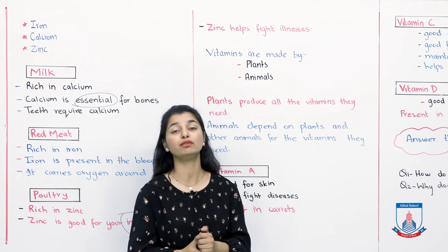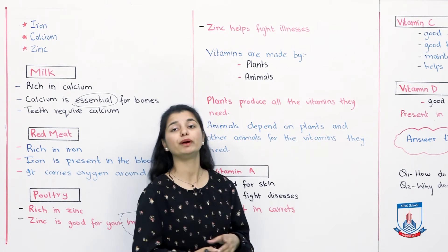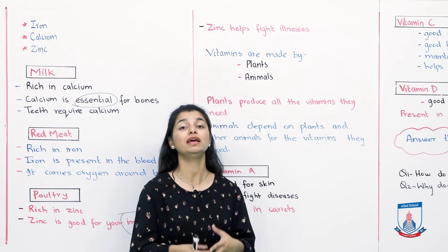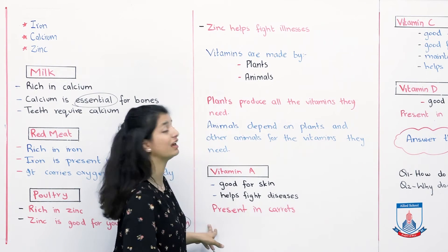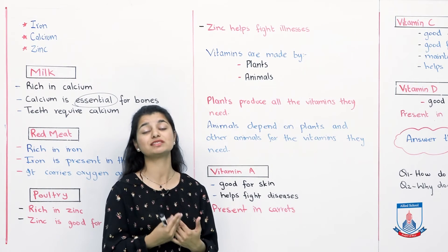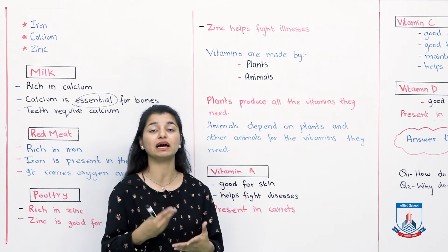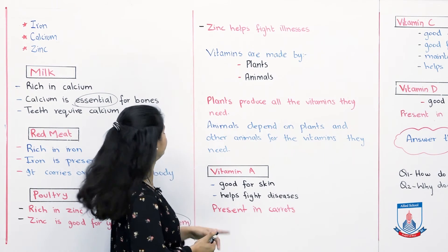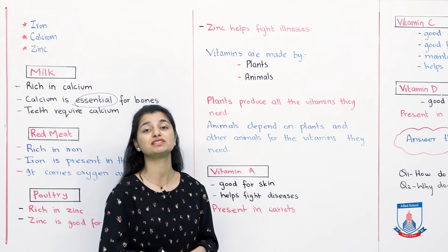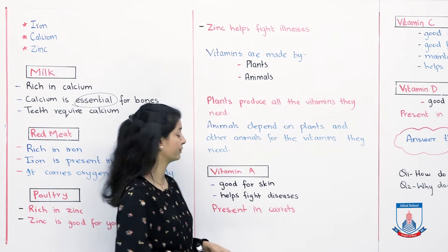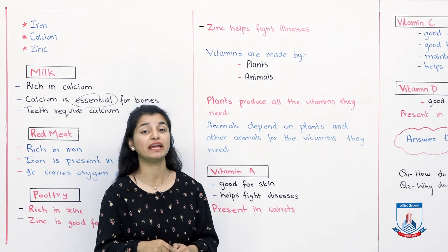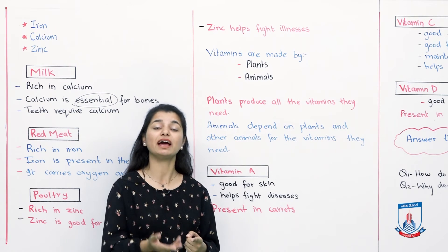We are going to discuss some examples of vitamins. First is vitamin A. Vitamin A is good for your skin — it keeps your skin fresh and clear. It also helps you to fight diseases through your immune system. Vitamin A is present in carrots, so if you eat more carrots, your body will get vitamin A, which benefits your skin and helps fight diseases.